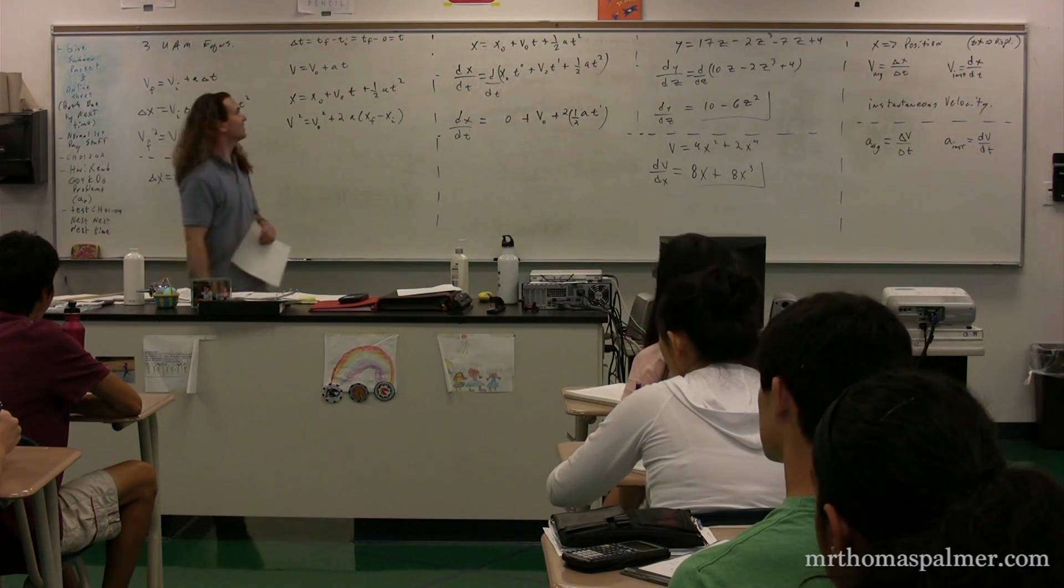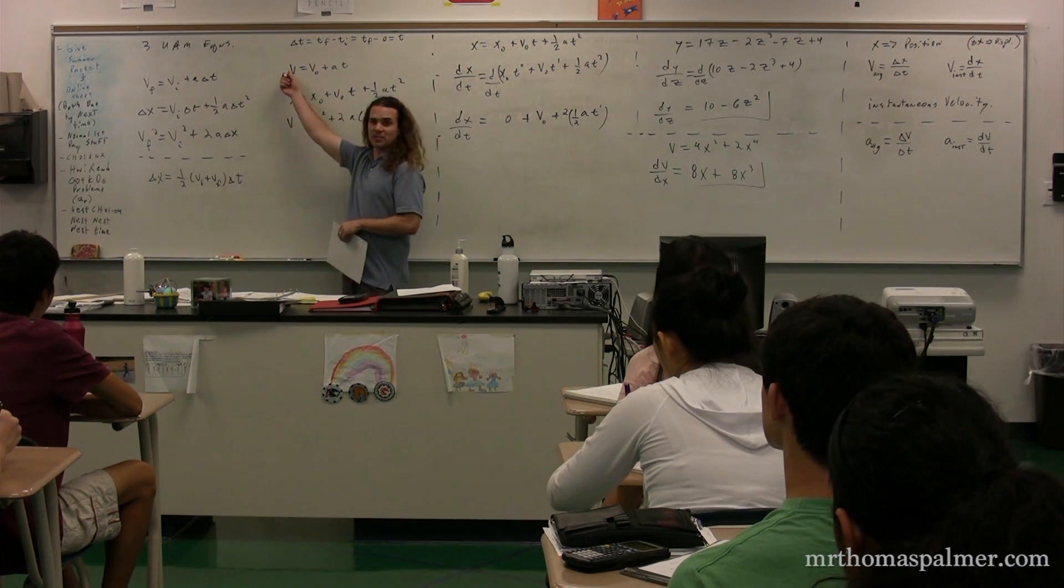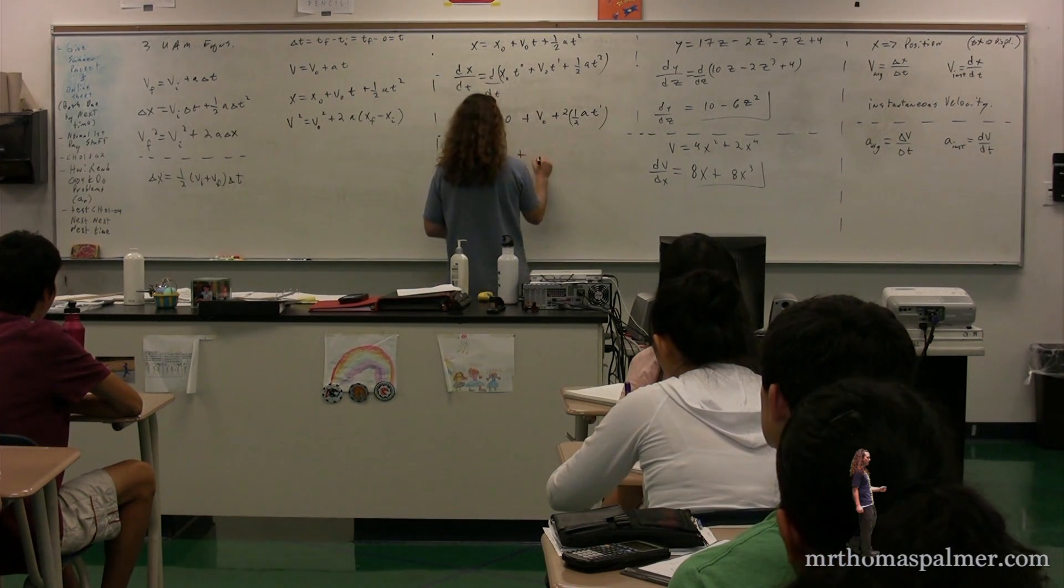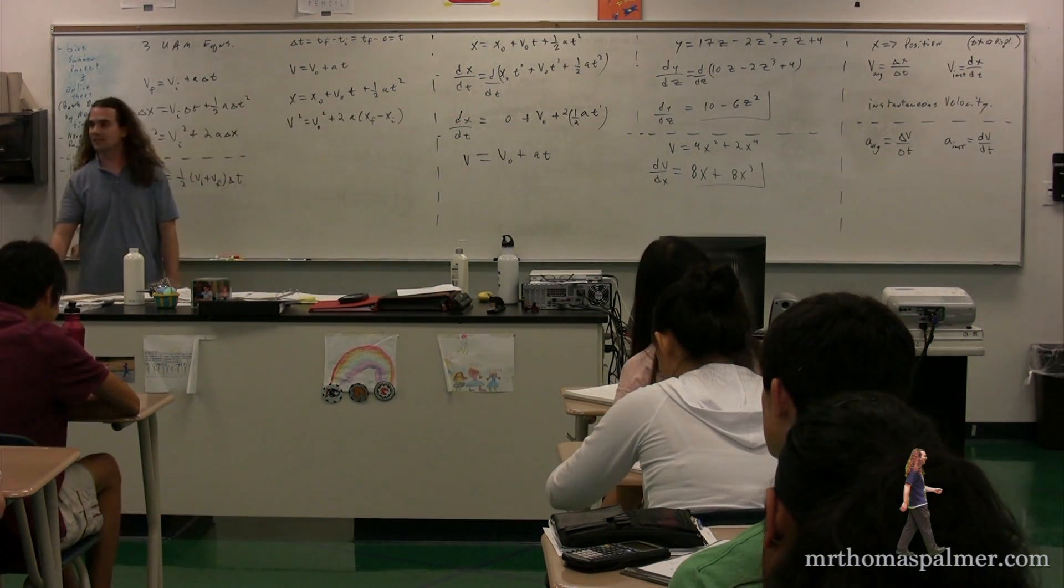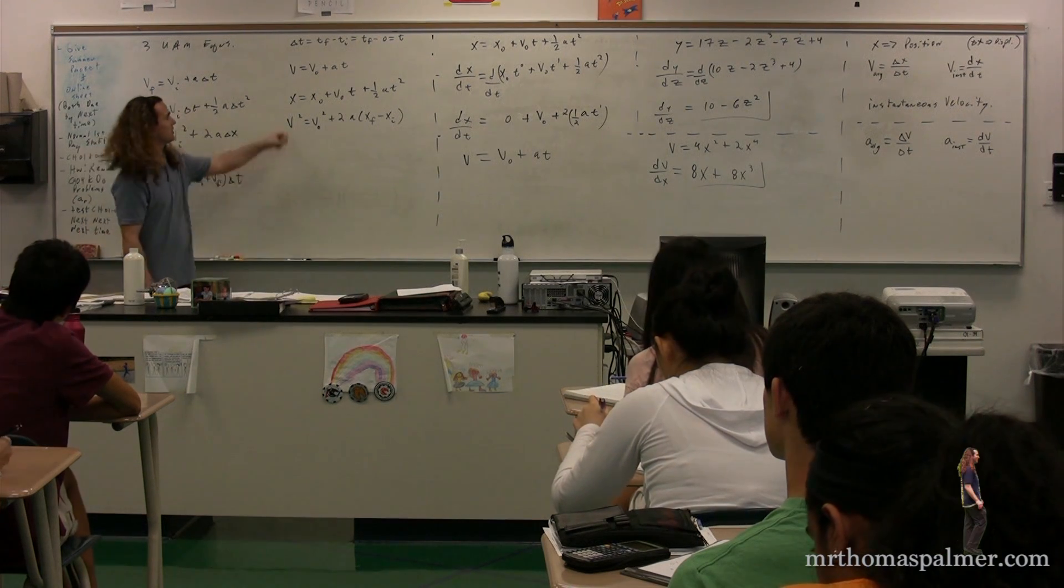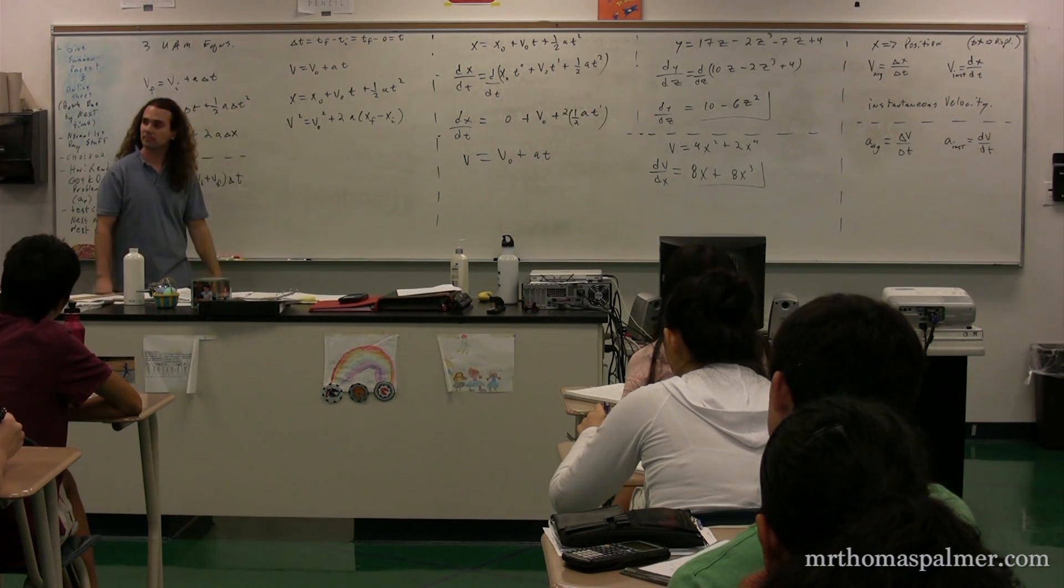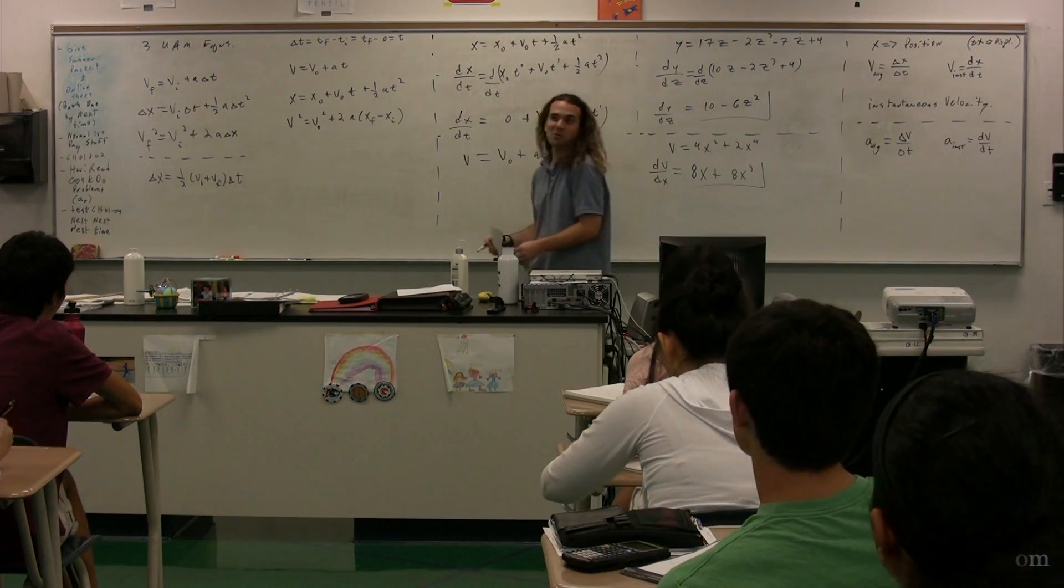It's the same equation as the first one. Derivative of position as a function of time is velocity. Zero goes away. We have v-naught plus acceleration times time, right? It turns out, if you know derivatives, you don't need anything more than this equation. You don't need both of these. When we get to integrals, we'll show that we don't need most of them.